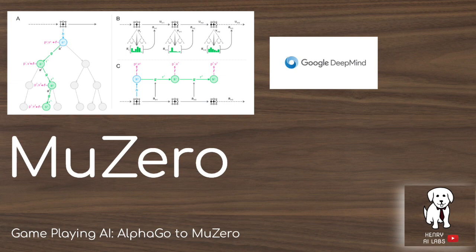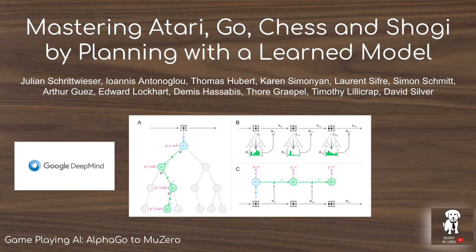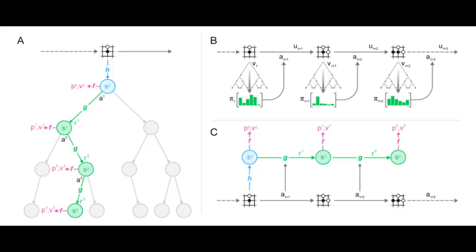This video looks at the new MuZero algorithm from DeepMind, in the series going from AlphaGo to AlphaGoZero to AlphaZero and now MuZero. MuZero is the latest step in making these algorithms more general and applicable to more reinforcement learning problems. It applies this algorithm to the Atari games — visually complex domains like Pac-Man and Brick Breaker — by introducing a new way of working without a perfect environment dynamics model.